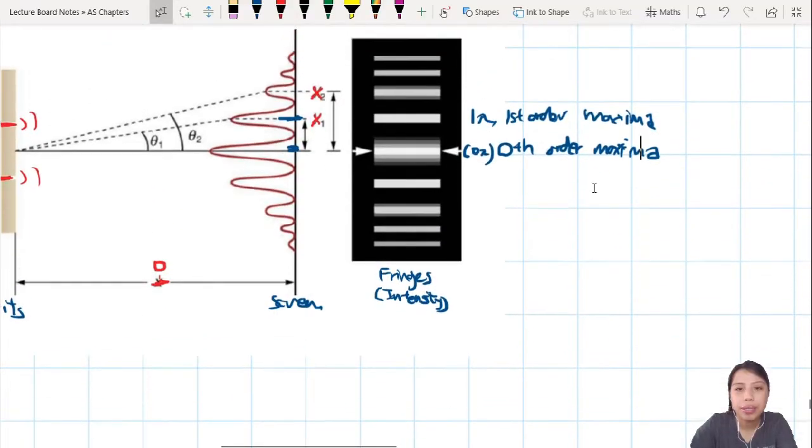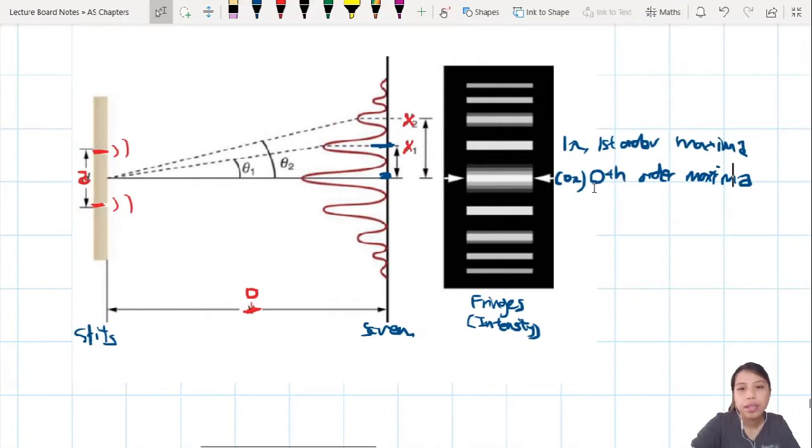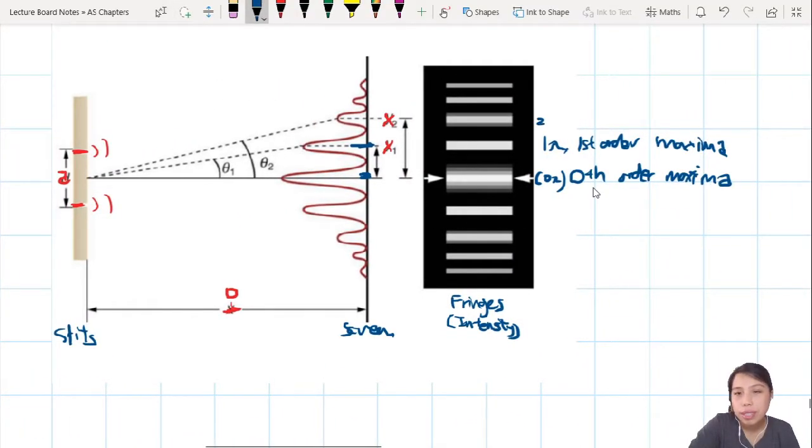And whoops, where did my drawing go? There it goes. And we keep going. Two wavelength path difference. Three wavelength path difference. Four wavelength path difference. All related to the previous ones. Second order. Third order. Fourth order. Maxima. So on and so forth.